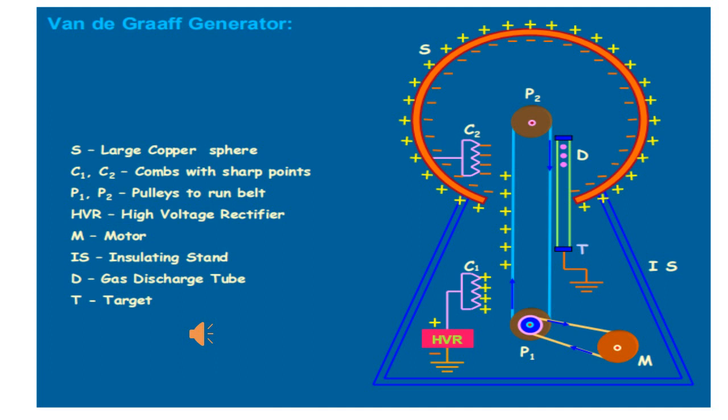If the positively charged particles which are to be accelerated are kept at the top of the tube, they get accelerated due to the difference in potential and are made to hit the target for causing nuclear reactions.